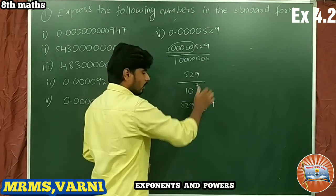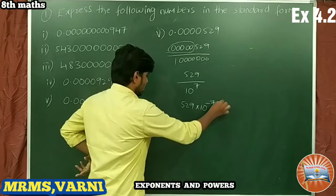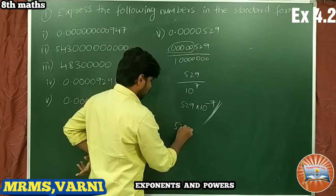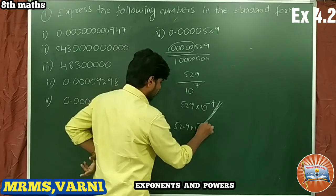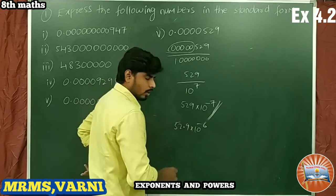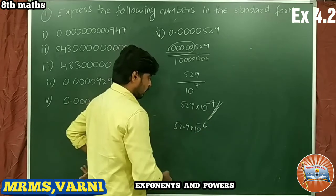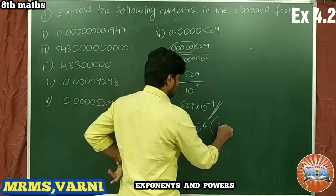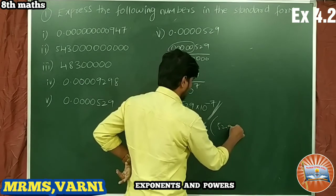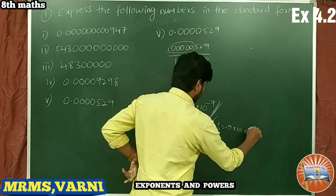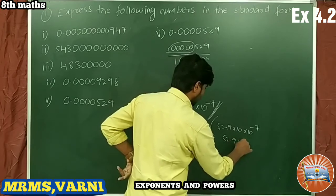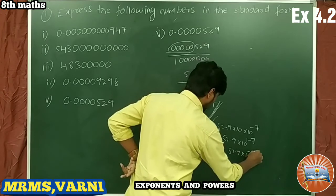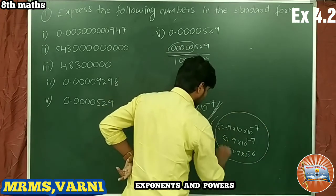Or we can write 52.9 × 10^(−6). If I multiply by 10, it becomes 52.9 × 10^(1−7) = 52.9 × 10^(−6). This is the reasoning for writing −6 here.